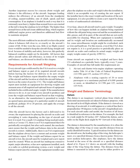Requirements for Aircraft Weighing: Every aircraft type certificated by the FAA receives a weight and balance report as part of its required aircraft records before leaving the factory. The report identifies the empty weight of the aircraft and the location at which the aircraft balances, known as the center of gravity (CG). The report must include an equipment list showing weights and moment arms of all required and optional items. The manufacturer may weigh every aircraft or weigh an agreed-upon percentage, perhaps 10–20%, and apply the average to all aircraft.